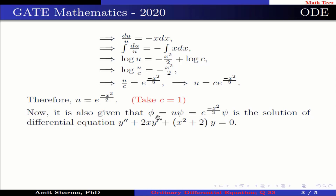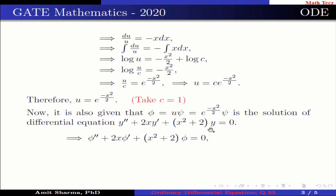Now it is also given that φ = u·ψ = e^(−x²/2)·ψ is the solution of the differential equation y'' + 2xy' + (x² + 2)y = 0, which implies φ'' + 2xφ' + (x² + 2)φ = 0 because φ satisfies this differential equation.